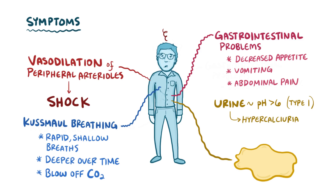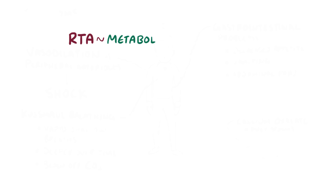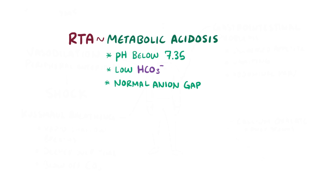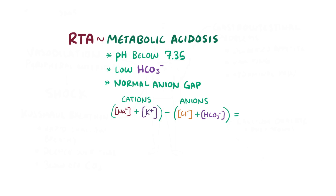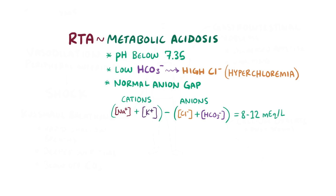This causes hypercalciuria and leads to the precipitation of calcium phosphate which can cause painful kidney stones. Renal tubular acidosis is a metabolic acidosis, meaning it has a pH below 7.35 and a low bicarbonate level, with a normal anion gap. That means that the difference between the measured cations and the measured anions is between 8 mEq per liter and 12 mEq per liter. In addition, blood potassium and urine pH are typically done to identify the exact type of renal tubular acidosis. Low levels of bicarbonate in the blood also leads to elevated levels of chloride, so hyperchloremia is a classic finding in renal tubular acidosis.